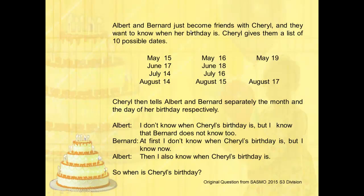Albert and Bernard just became friends with Cheryl and they want to know when her birthday is. Cheryl gives them a list of 10 possible dates. Cheryl then tells Albert and Bernard separately the month and the day of her birthday respectively. Albert says: I don't know when Cheryl's birthday is, but I know that Bernard does not know too.